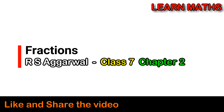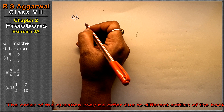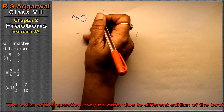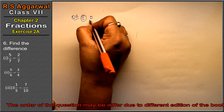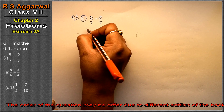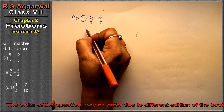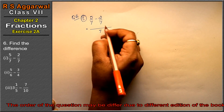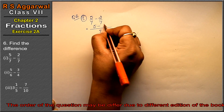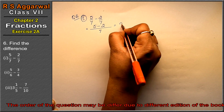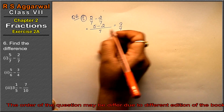Let's do question no. 6 of exercise 2a — fraction question no. 6: find the difference. First part, we have to take a difference: 5 upon 7 minus 2 upon 7. Since 7 is the denominator in both, LCM is 7, so we write 5 minus 2, that means 3 upon 7 is the answer.